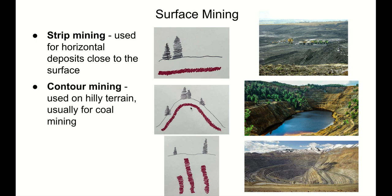If our mineral deposit is in a hill — likely pushed up along with the hill through tectonic plate movement — we need to expose that mineral deposit using contour mining. We bulldoze terraces, which are flat pads that step down the hill. We do a flat pad at the top, another flat pad in a ring a little lower, another a little lower, and so on to expose our mineral seam all the way down the hill.